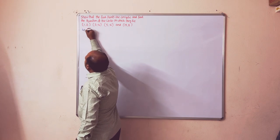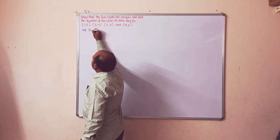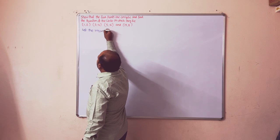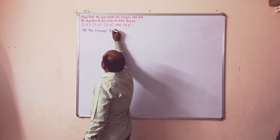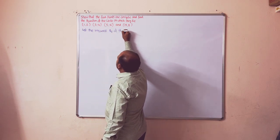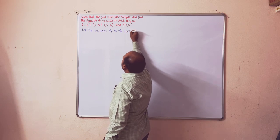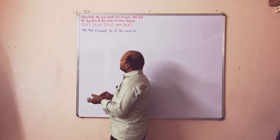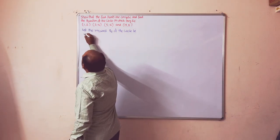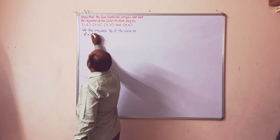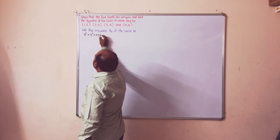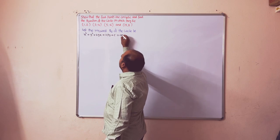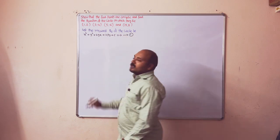Let the required equation of the circle be the general equation of a circle. The general equation of a circle is: x² + y² + 2gx + 2fy + c = 0. Call this Equation 1.